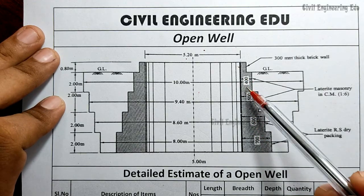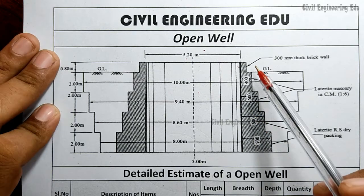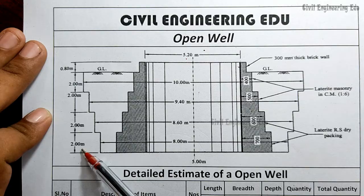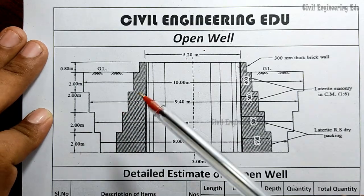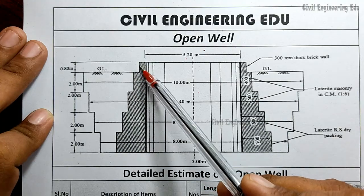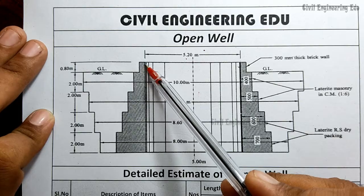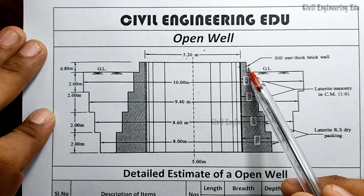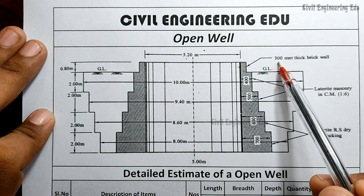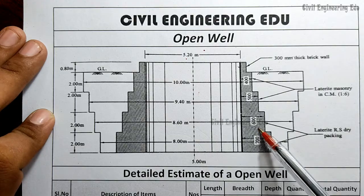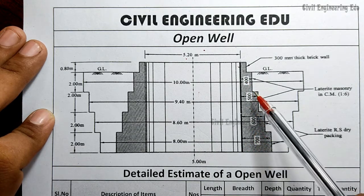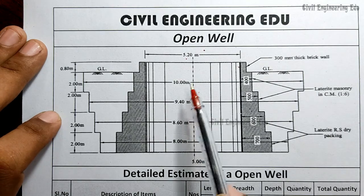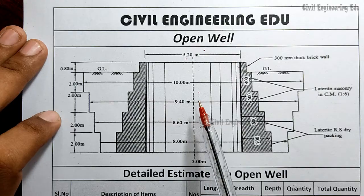The masonry is constructed step by step, and each step will be two meters — first step two meters, second step two meters, and so on. Above ground level we will construct a parapet wall for safety purposes, with a height of 0.8 meters. If you observe the thickness of the walls: 300 mm for the first step, then 400, 500, 600, 700 — the thickness is changing step to step.